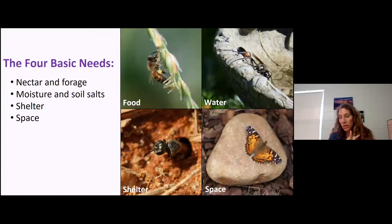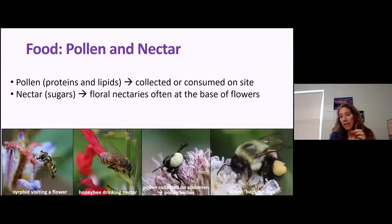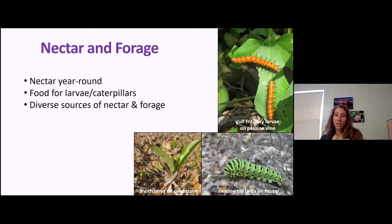What do pollinators need? They need nectar and forage, moisture and salts, and shelter and space. Pollen is made out of proteins and lipids, and it's collected and consumed on site. The nectar is like the sugar — a Kool-Aid treat — and they pick up pollen on their body as they go to the next flower. That's why we need pollinators: they move pollen from plant to plant. Providing these resources year-round is really important — we don't want to just have everything come out in spring and then have nothing.